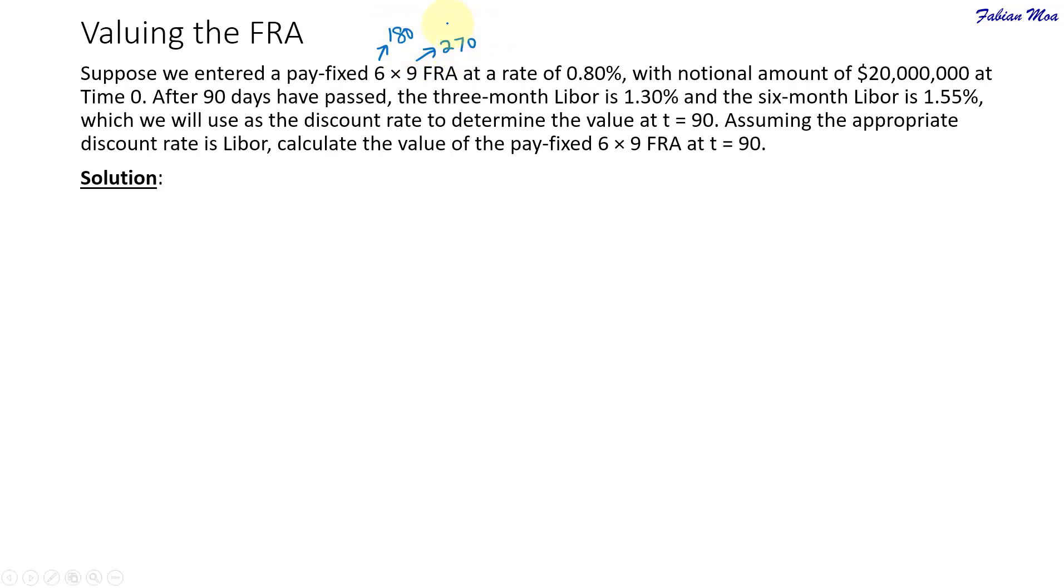If you refer to the textbook, the formula for this particular FRA valuation is very complicated, but if you draw the timeline it will be much easier to solve. What we have here is the timeline from zero, and then the FRA will expire on day 180, and then the underlying here is a 90-day LIBOR or three-month LIBOR.